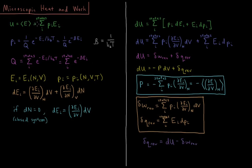Our internal energy is the sum over all states of the probability times the energy of that state. An infinitesimal change in internal energy is then the sum over all states of the product rule applied to Pi·Ei — which gives the probability times the change in energy levels, plus the energy levels times the change in the probabilities. That's the standard product rule from calculus.